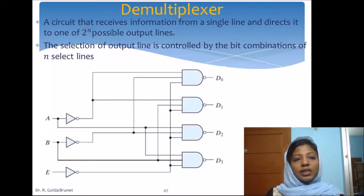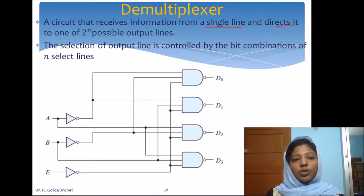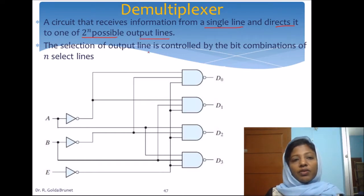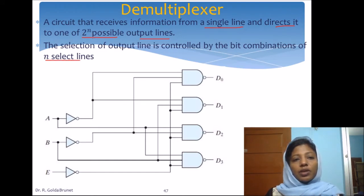A demultiplexer circuit receives input from a single line and directs it to one of the 2-to-the-power-n possible output lines. We will have n select lines which will decide which of the 2-to-the-power-n output lines we have to choose to direct the input.